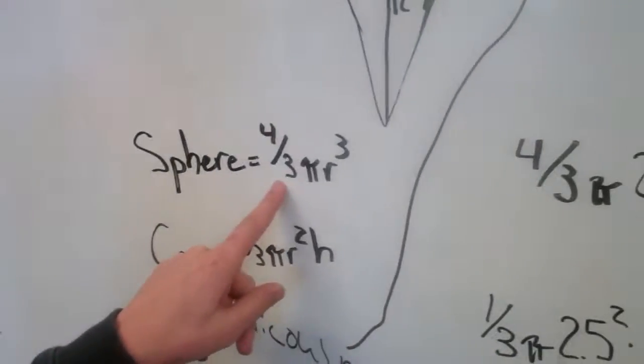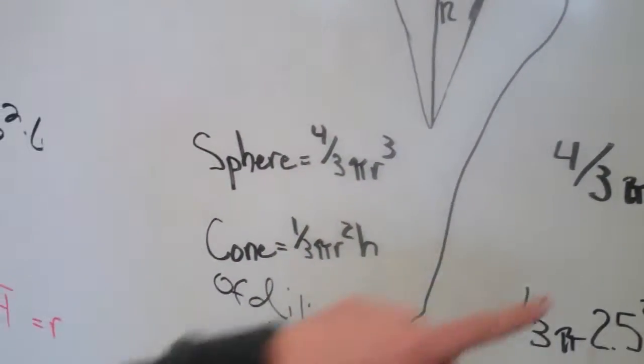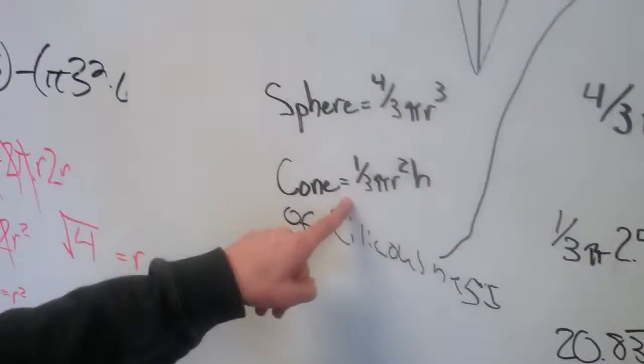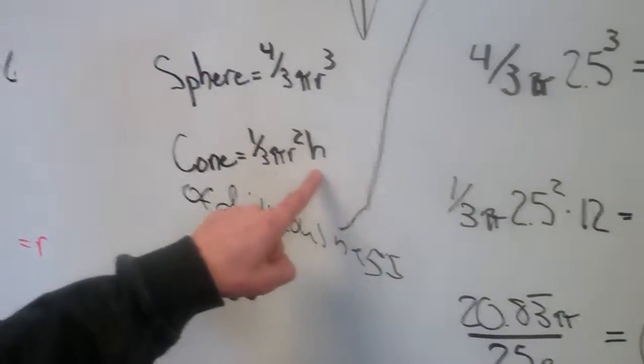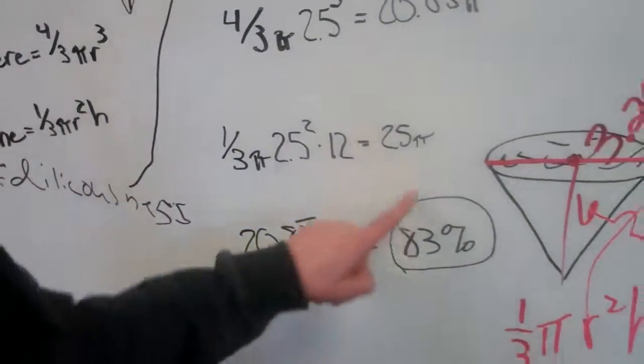So the sphere is 4 thirds pi r cubed. And then you plug that in and you get 20.83 pi. And then for the cone, it's 1 third pi r squared times height. And then you plug that in and you get 25 pi.